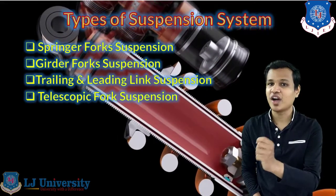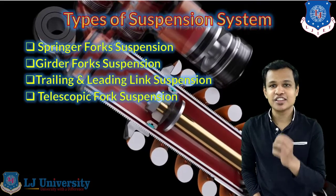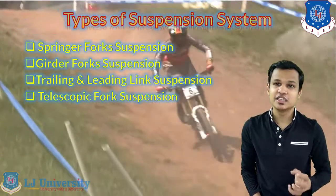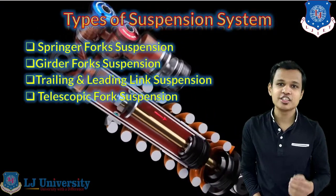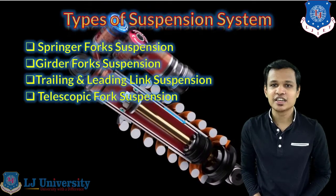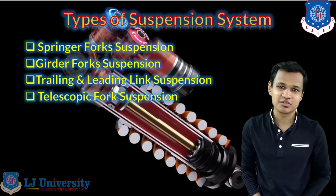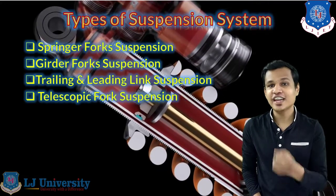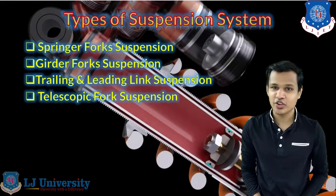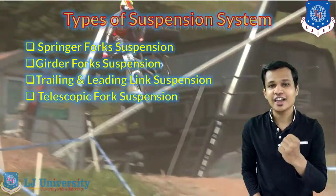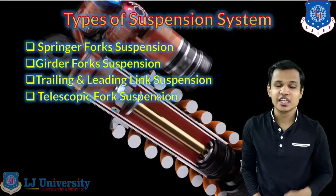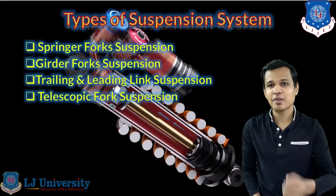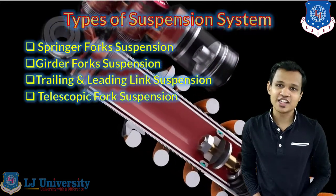Next is the telescopic fork suspension. It is the most widely used suspension system nowadays in two wheelers, especially automatic transmission vehicles such as Activas and Jupiter. It provides very optimum ride comfort to the driver with comparatively lower weight. Weight is always a criteria for vehicle components — it should be as low as possible, because more weight means increased engine power requirement and reduced mileage.